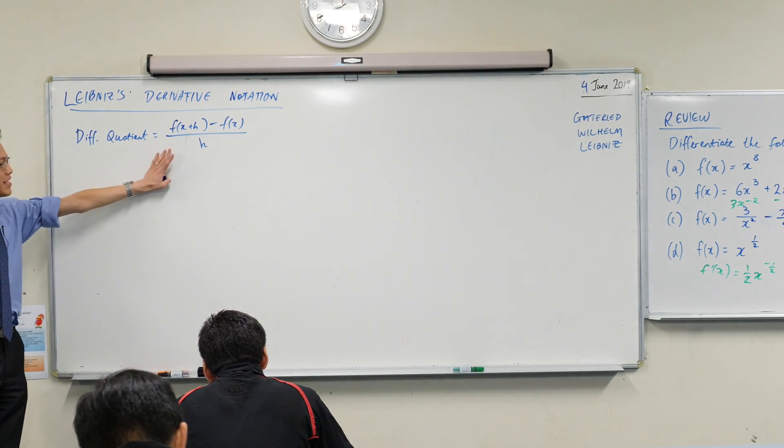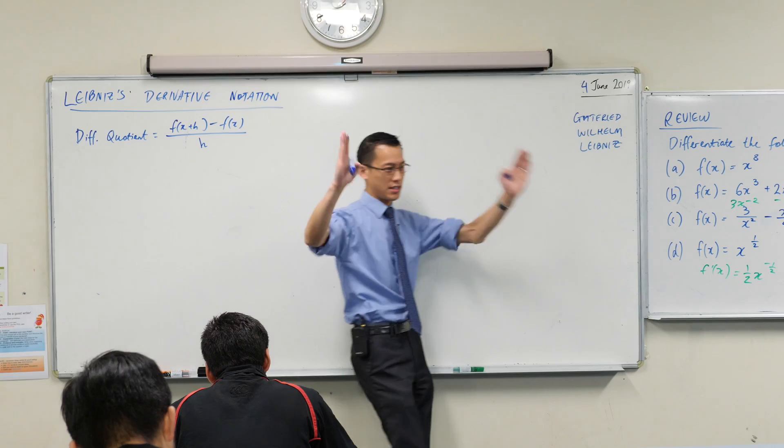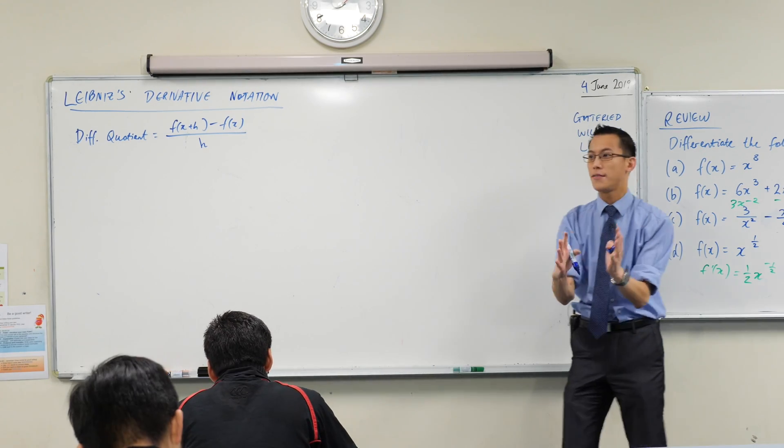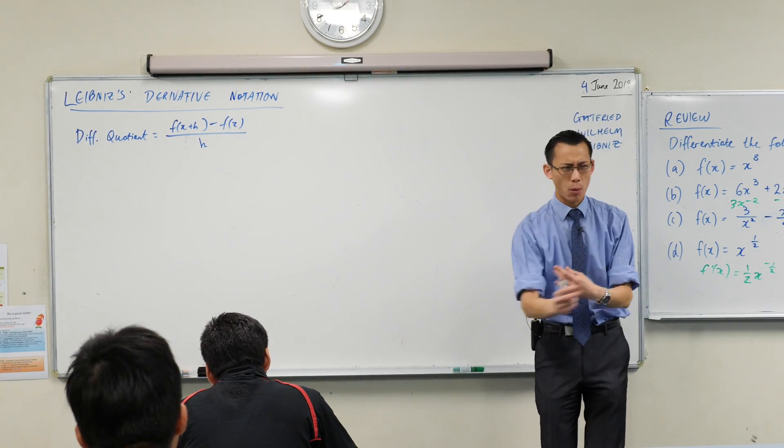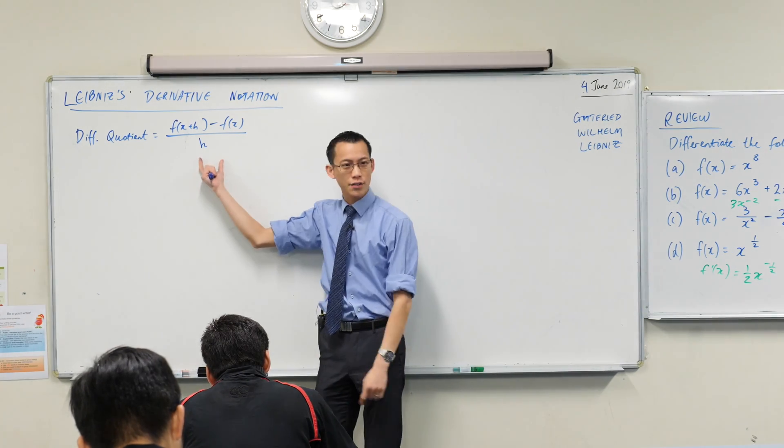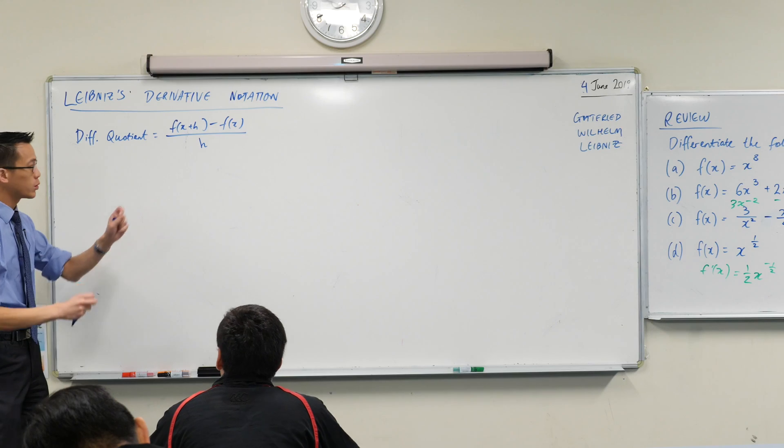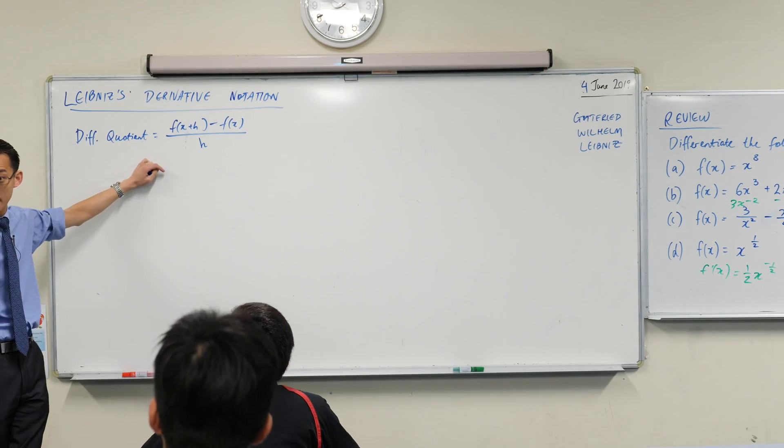And then we said, well this is just an approximation. This is like measuring Usain Bolt over 9.69 seconds, or one second, or half a second. It's pretty close, but what if we could do it precisely, not over a chunk of time, but over an infinitesimally small chunk of time. So what we did was we applied this thing called a limit. Do you remember that?